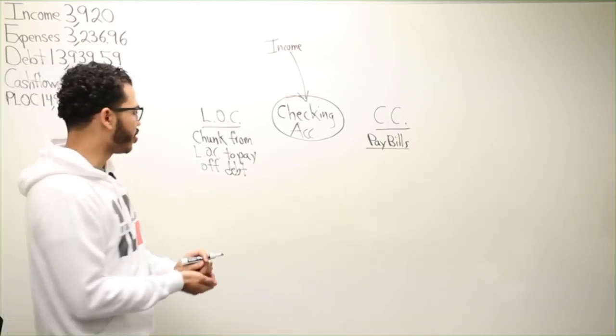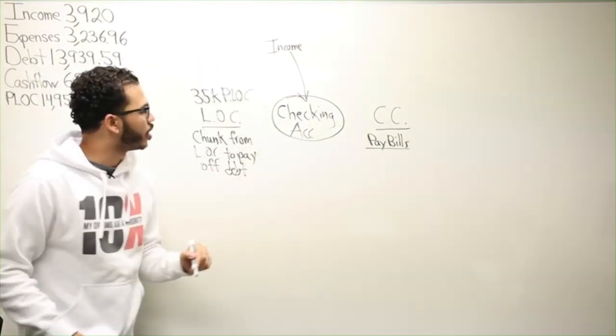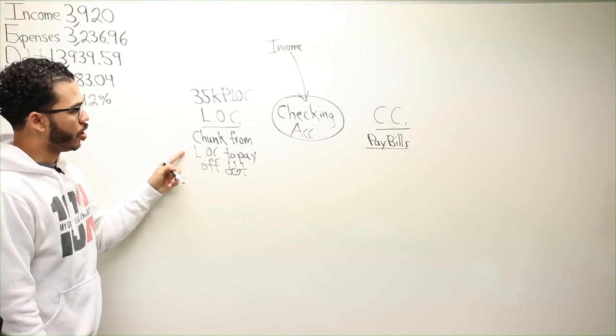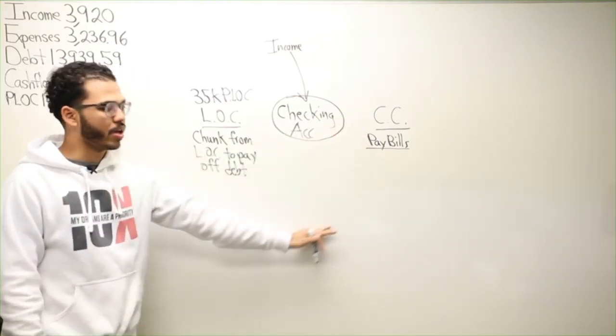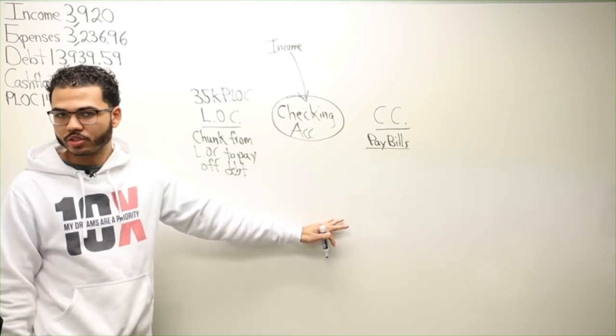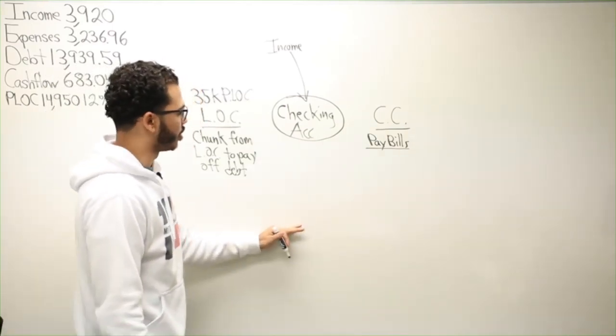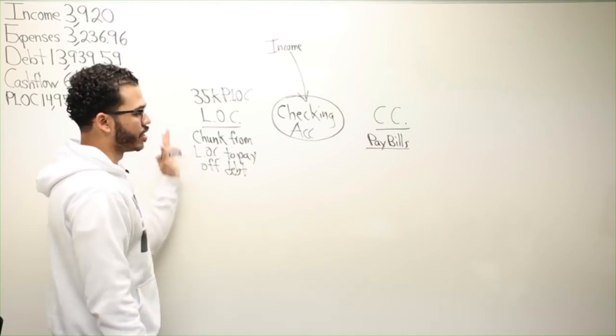I think she told us how much she got. You got a $35,000 PLOC. So before you start using your credit cards and whatnot, you should be making a chunk towards a certain debt to increase cash flow. Let's say you did that already.